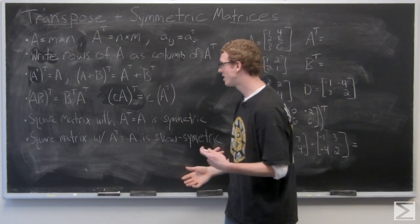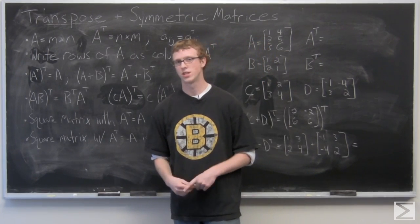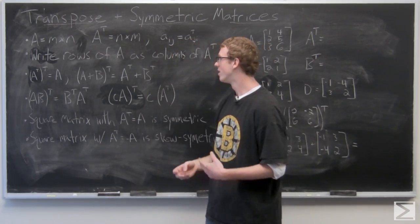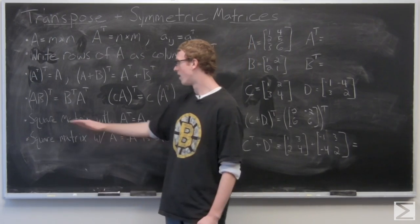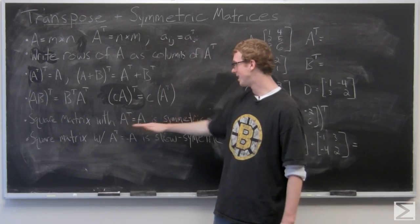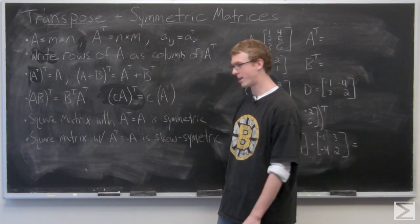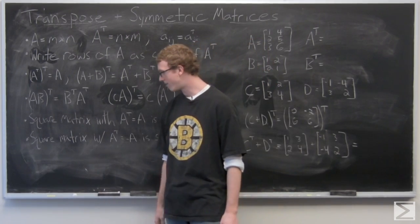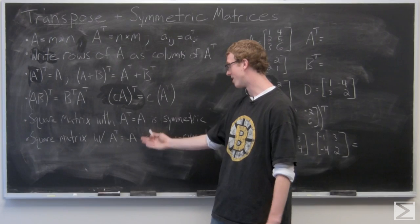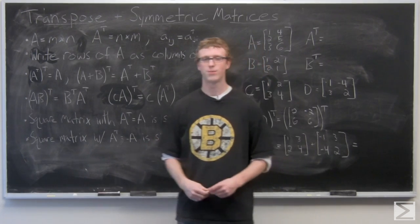And for symmetric matrices, they have to be square matrices. Otherwise you can't have symmetry. Square matrix with A T equals A is symmetric. We'll take a look at an example of that. And a square matrix with A T equals negative A is called skew symmetric.